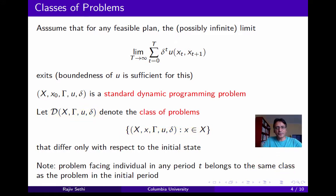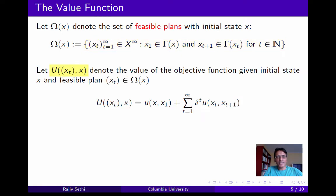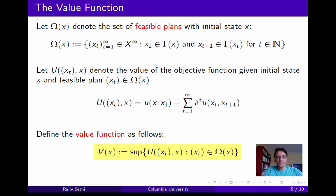Let omega of x denote the set of feasible plans with initial state x — that is, sequences xt satisfying x1 is in the image of x under gamma, and xt+1 is in the image of xt under gamma for all t. We use capital U to denote the payoff obtained starting from x following a feasible plan xt: it is the initial one-period return plus the discounted sum of all subsequent one-period returns. The value function V(x) is defined as the supremum of this set of attainable payoffs.